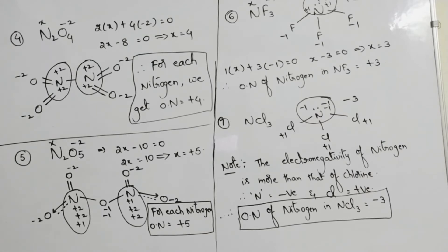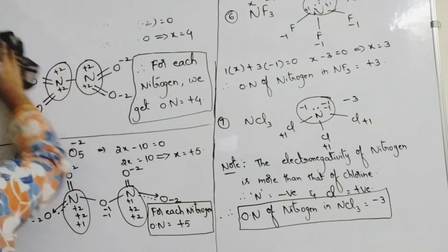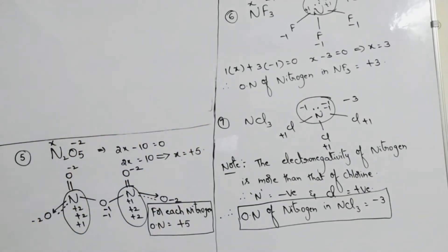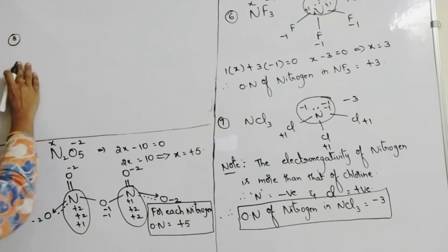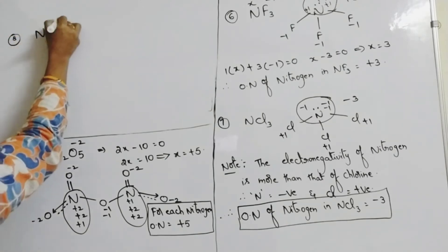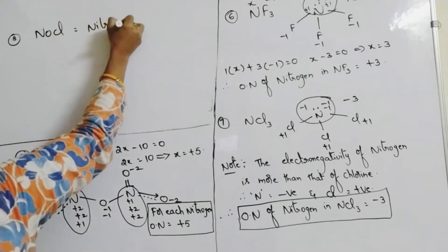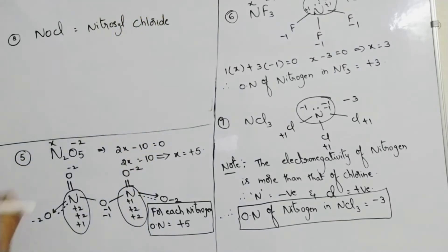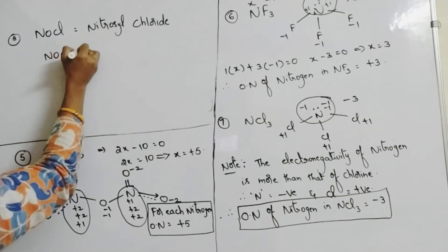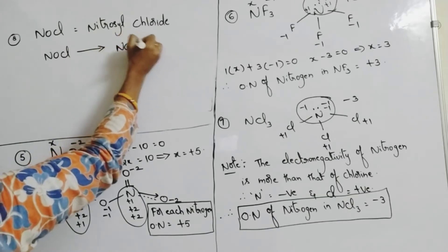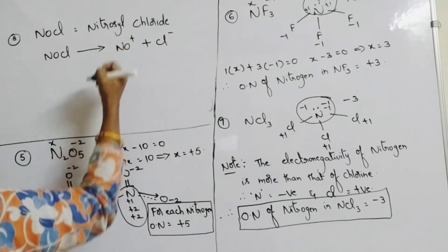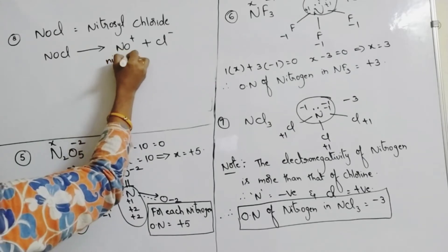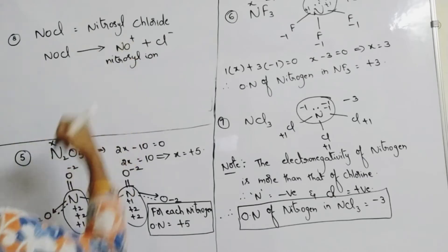Question number 8: NOCl — nitrosyl chloride. NOCl dissociates into NO⁺ (nitrosyl ion) and Cl⁻. The nitrosyl ion NO⁺ is a positively charged ion carrying +1 charge. In the structure, N is double-bonded to O.